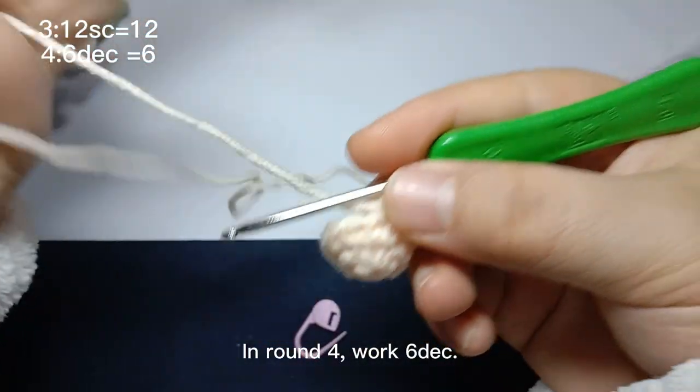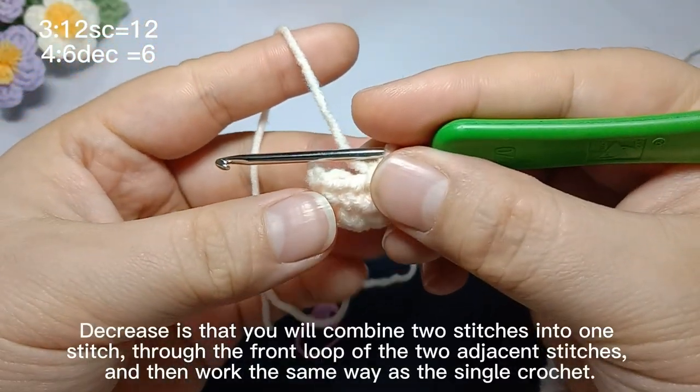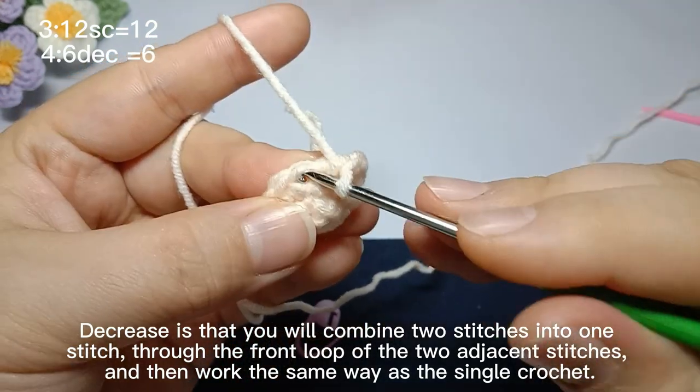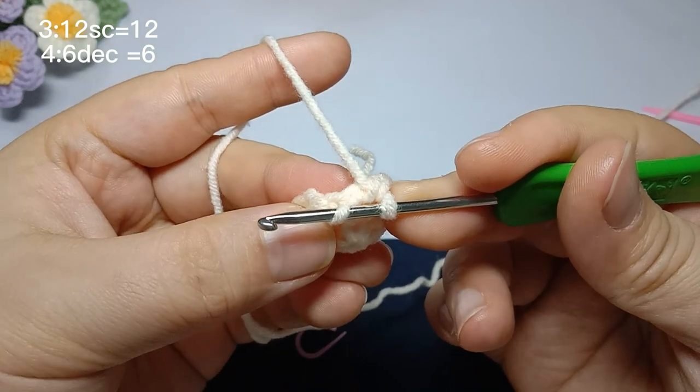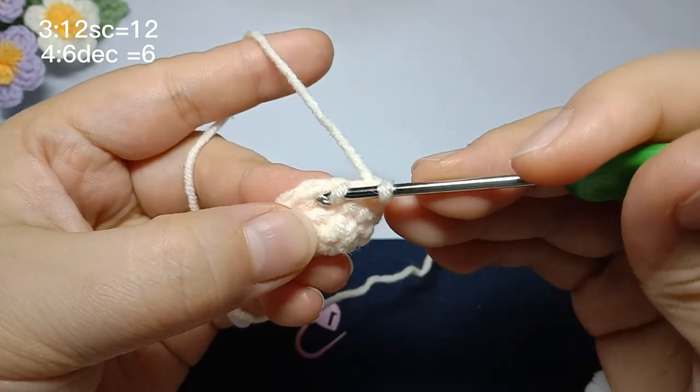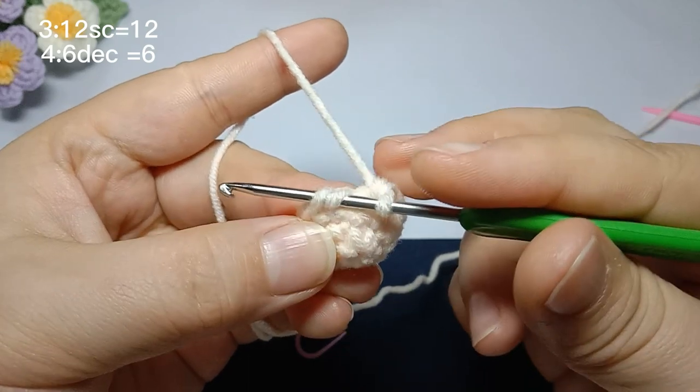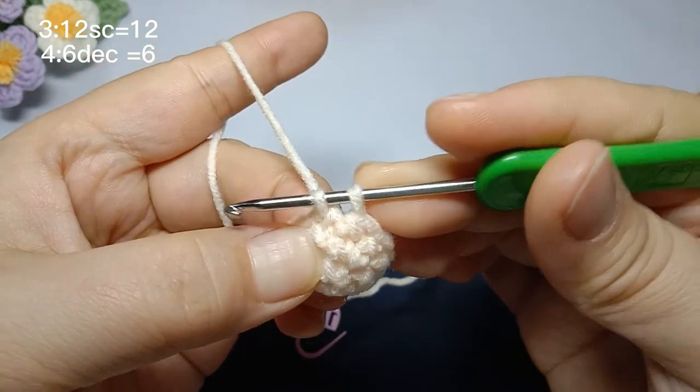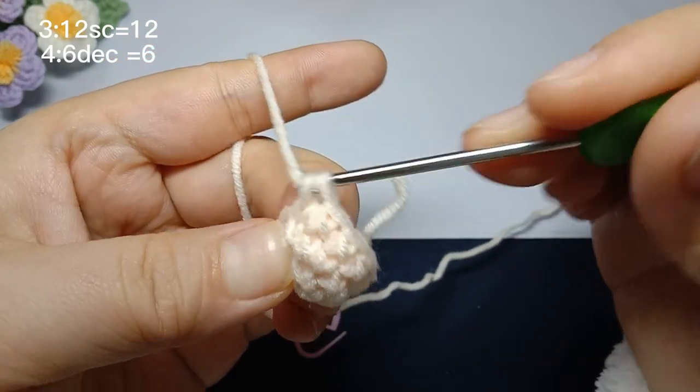In round four, work six decreases. A decrease means you will combine two stitches into one stitch through the front loop of the two adjacent stitches and then work the same way as a single crochet.